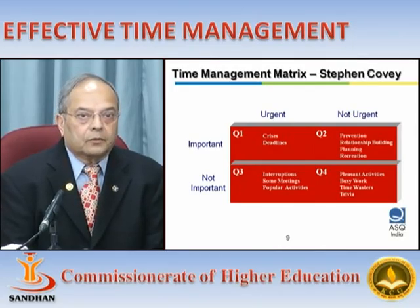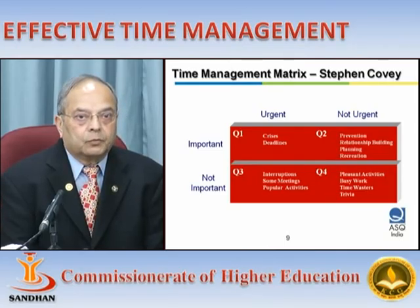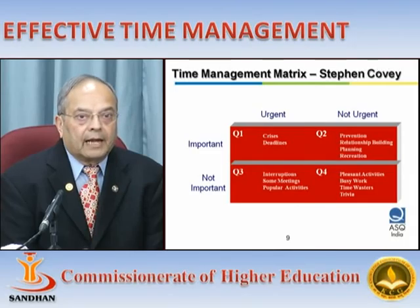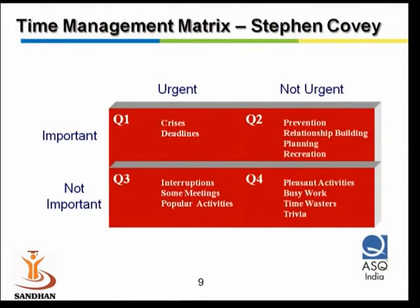According to Dr. Stephen Covey, quadrant two is where we need to spend 90 to 95 percent of our time — which is prevention effort, building relationships, doing all the planning effort. When you have done a lot of good work, you need to take a little bit of time to recharge your battery, that is recreation.